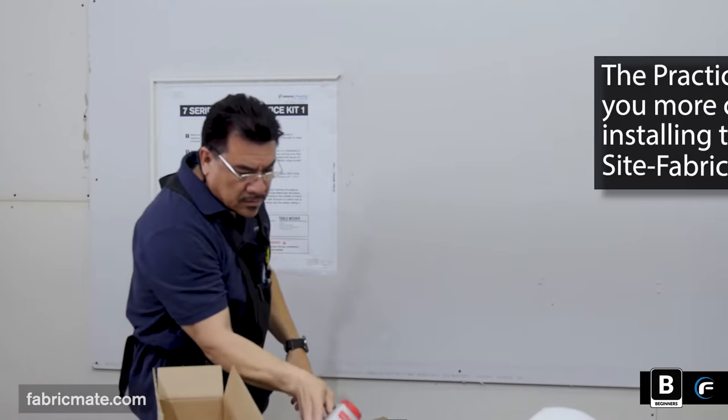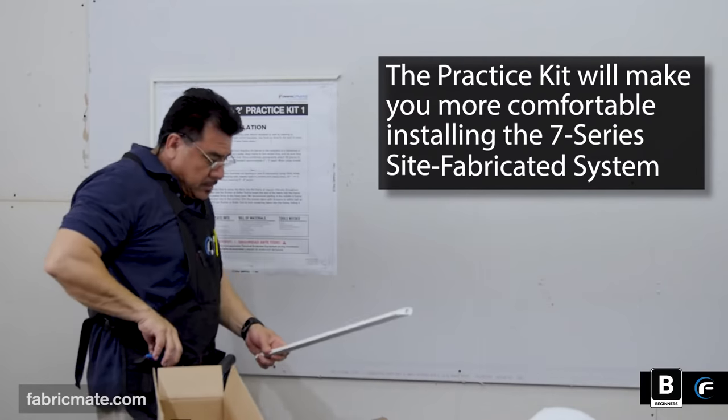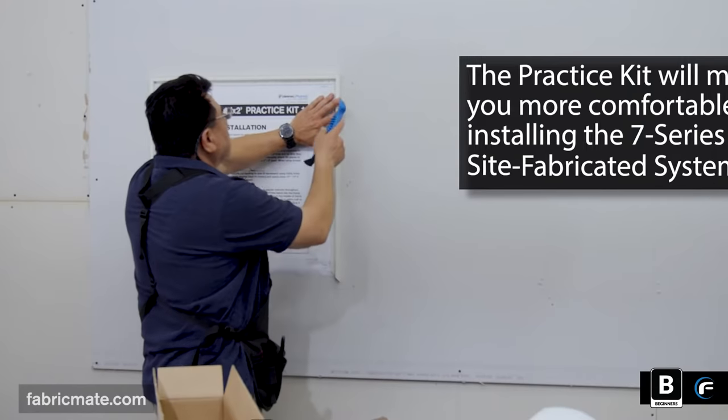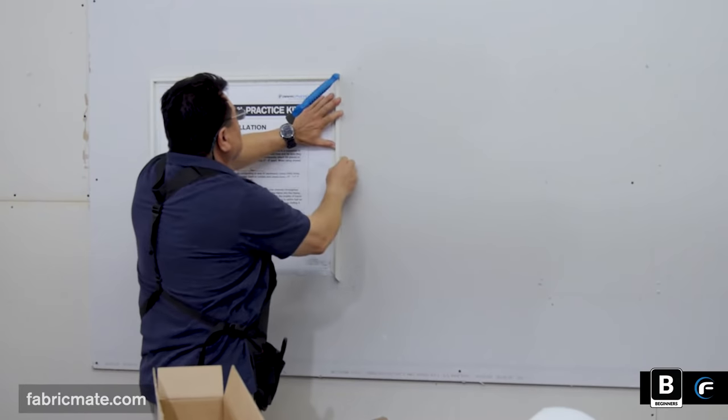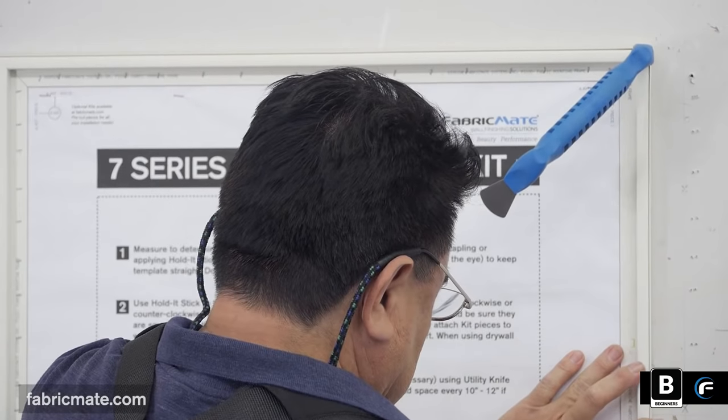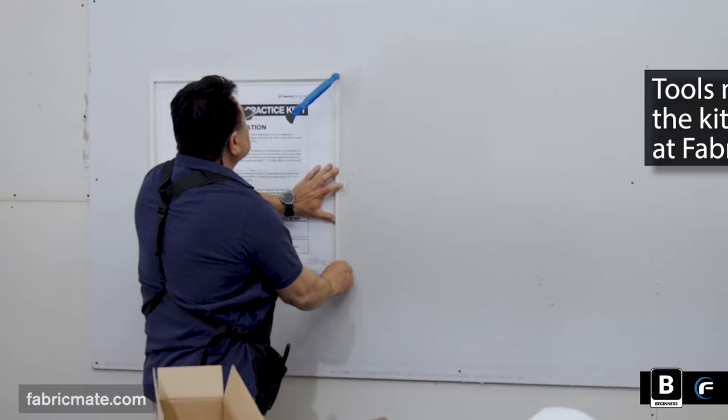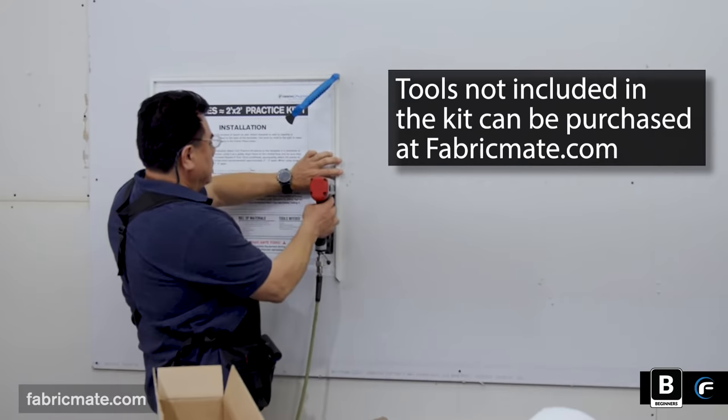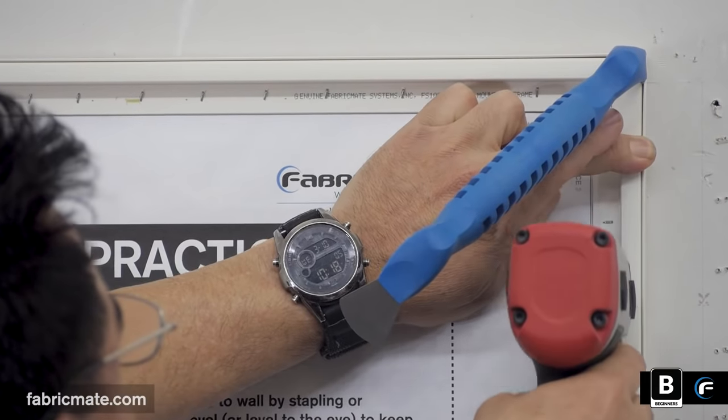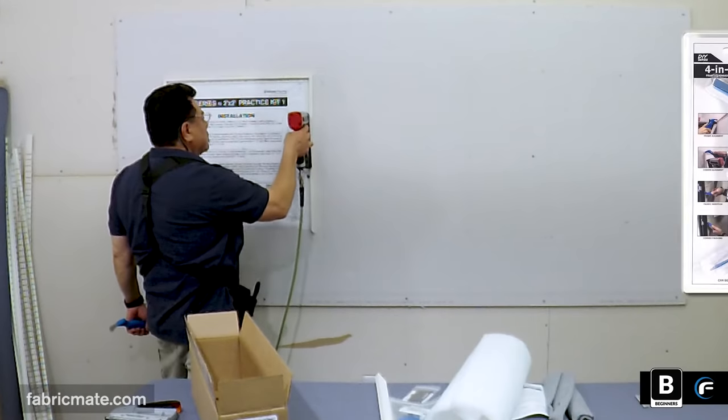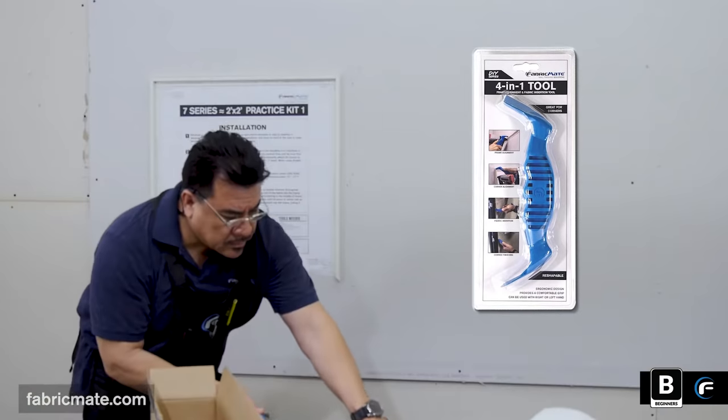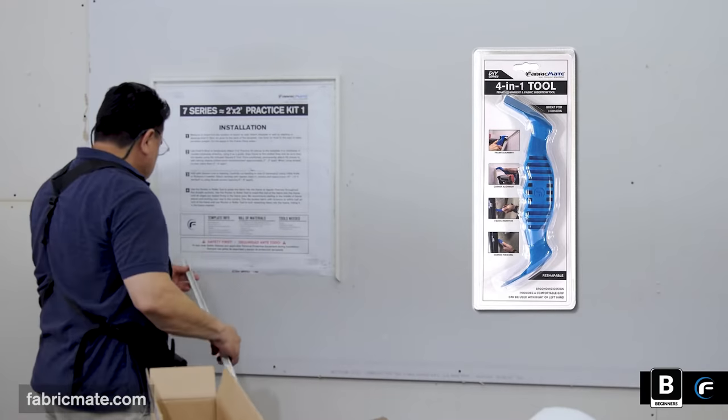The practice kit is going to help you to be comfortable with the 7 Series site-fabricated system. So he's using the alignment tool. Some of these tools you're going to see are not in the kit, but they're readily available at FabricMate.com in the tools and accessories section. Very handy. There's a DIY version of the 4-in-1 tool here. Very inexpensive. Handy for aligning your corners or stuffing the fabric into the corner.